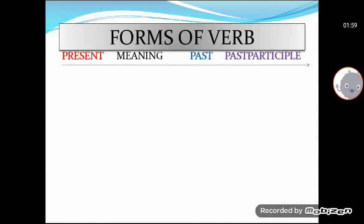Three forms of verb. So the three forms are divided into three parts with three names: present, past, and past participle. I will give you meanings side by side to make you understand.